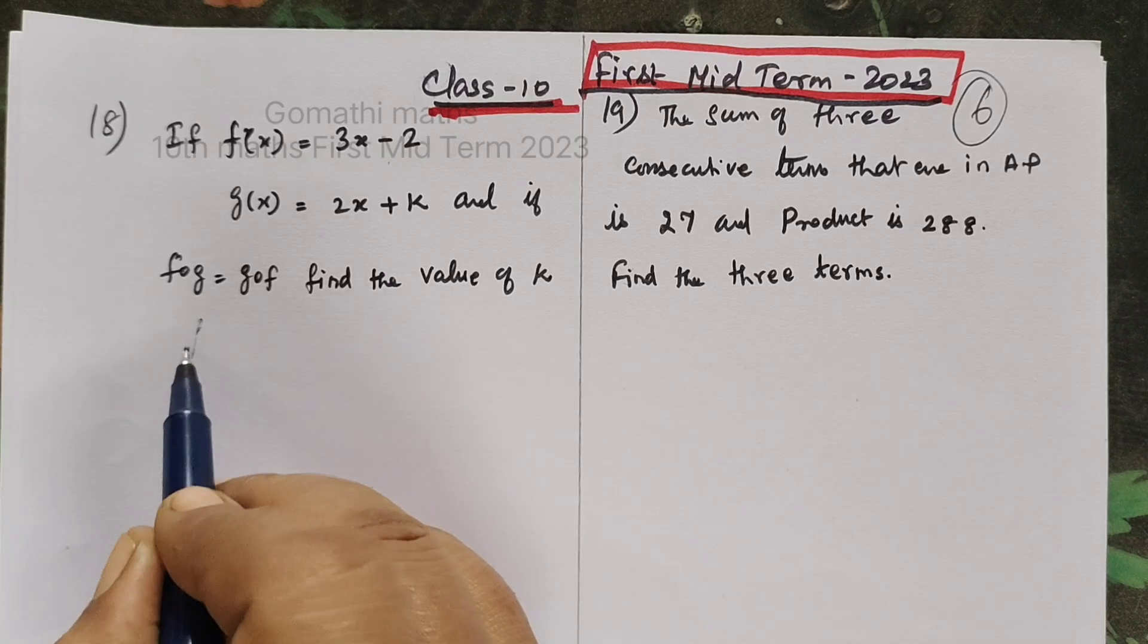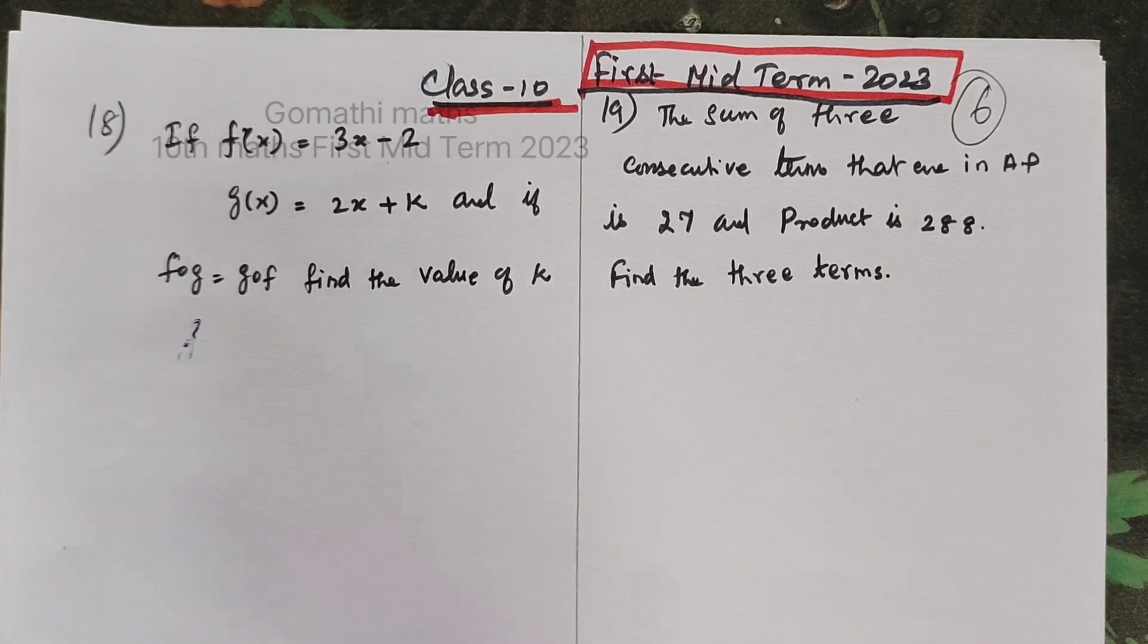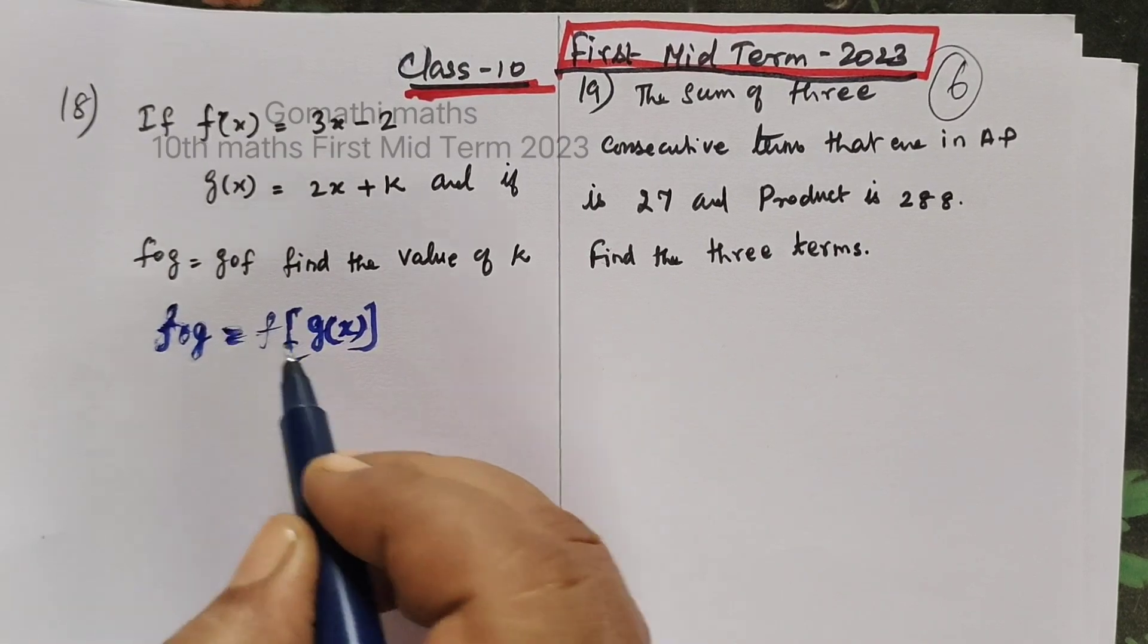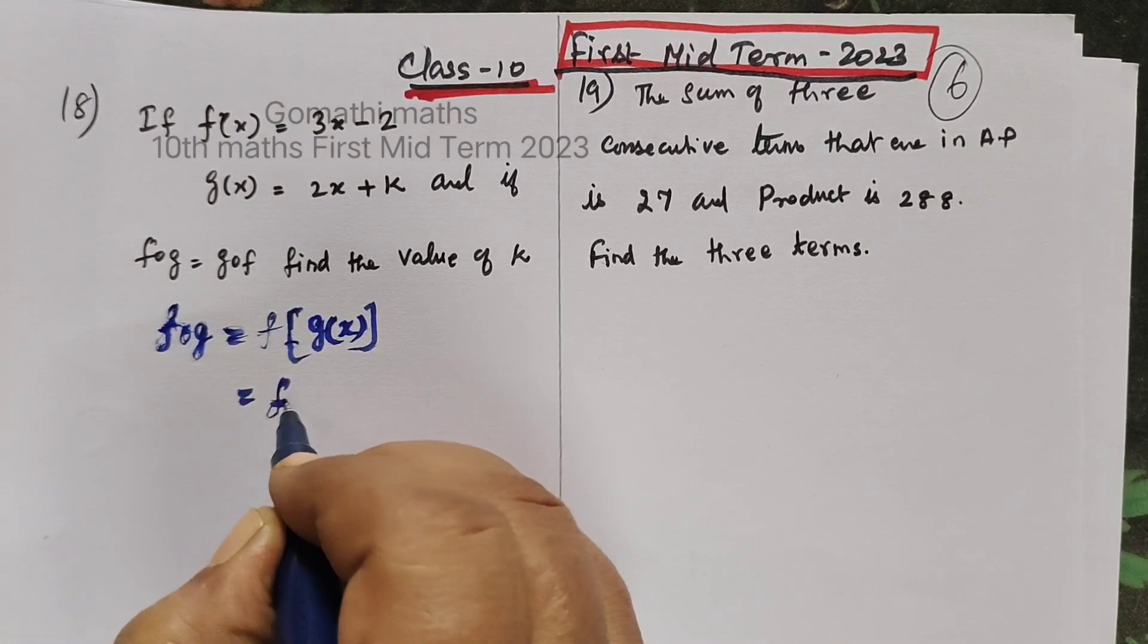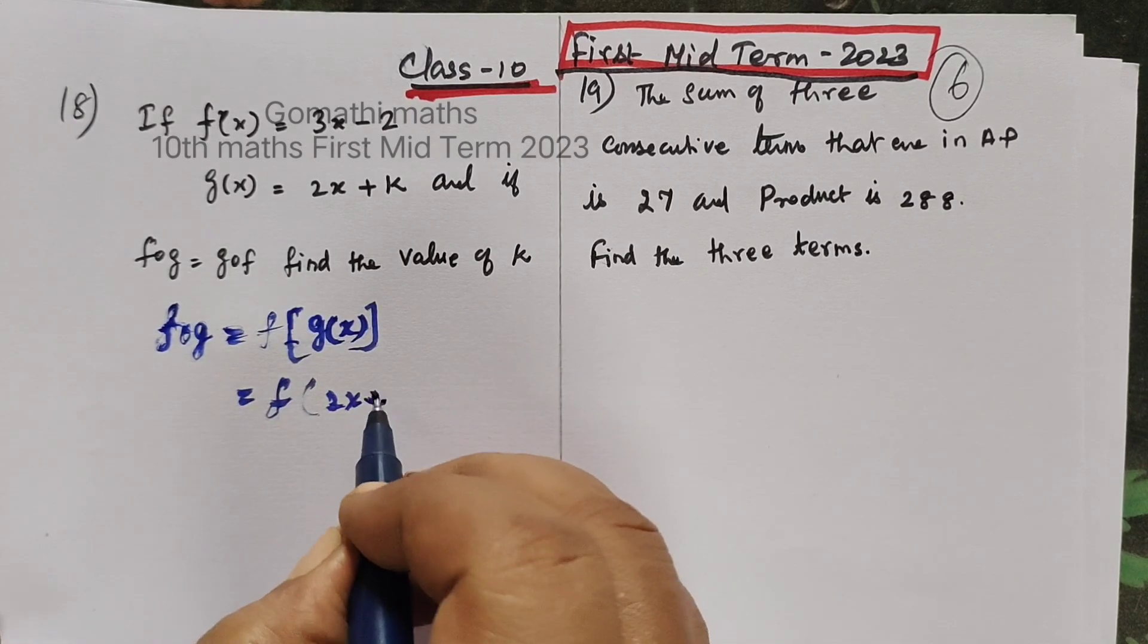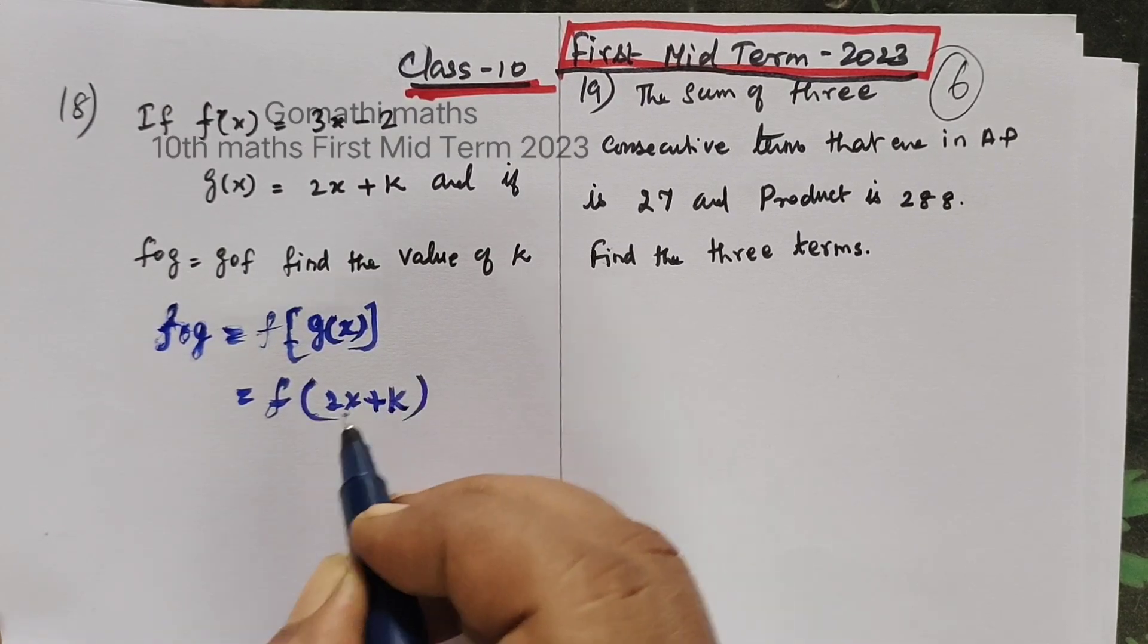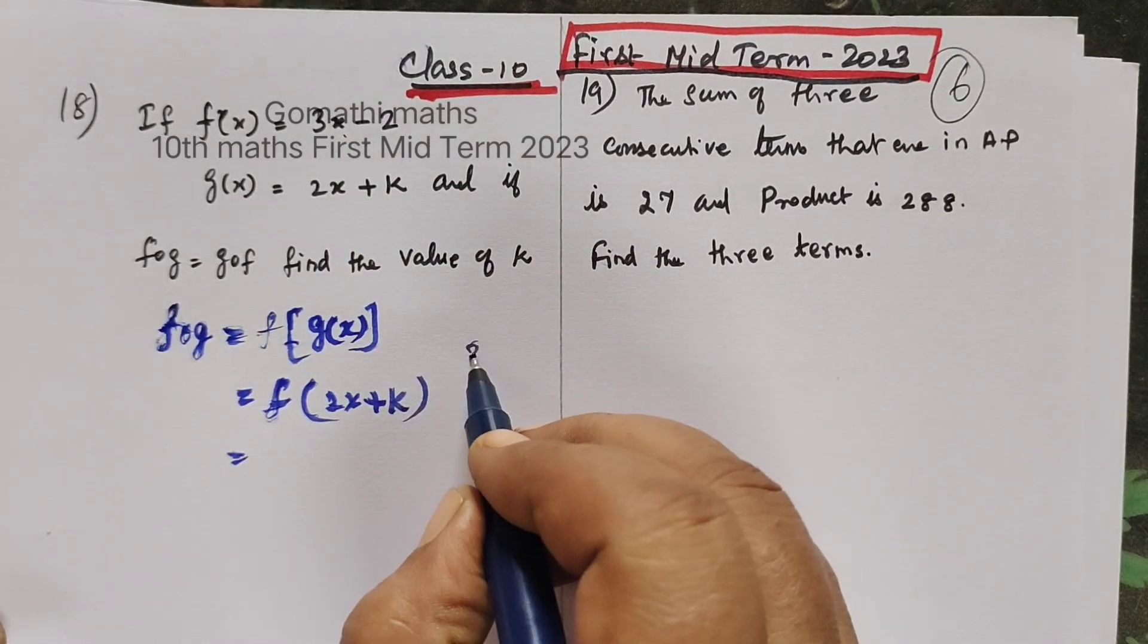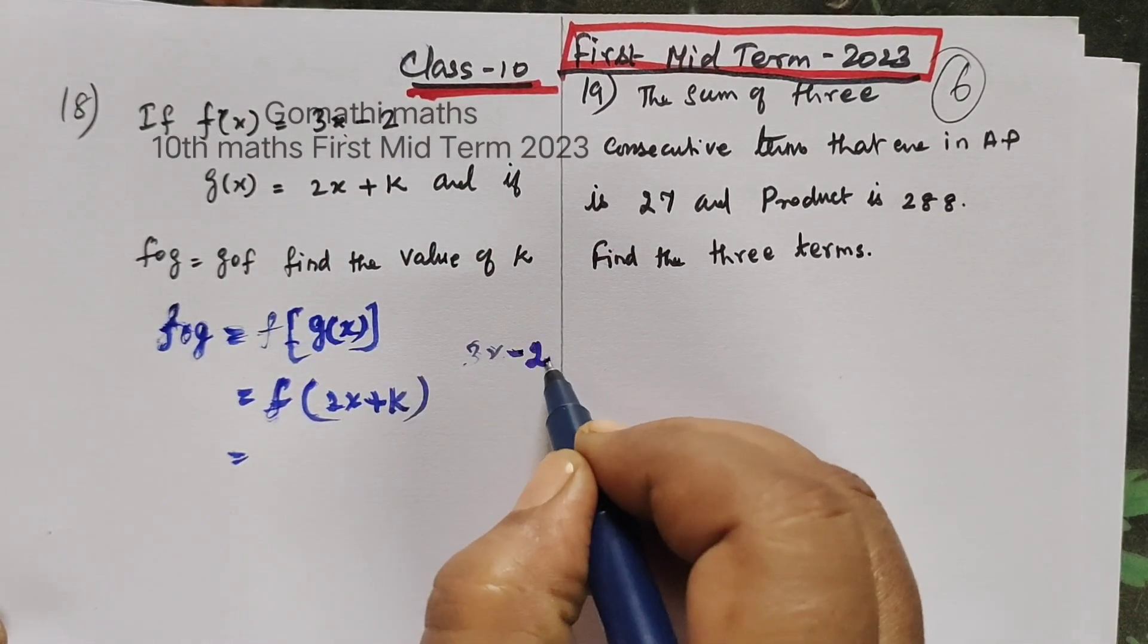We find f∘g. f∘g equal to f of g(x). f of, what is g(x)? g(x) is 2x plus k. Now you see f, f is 3x minus 2. Clear?